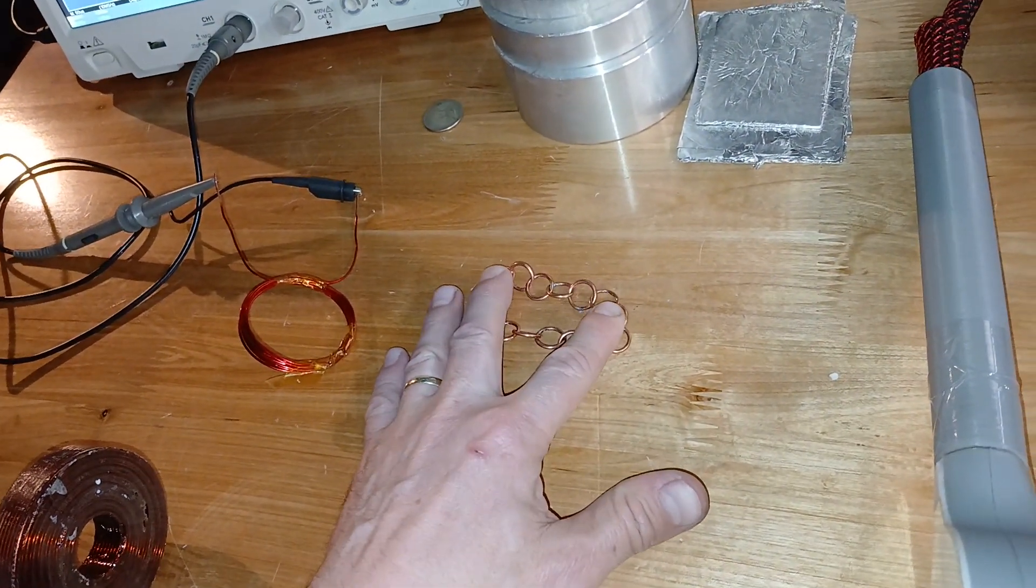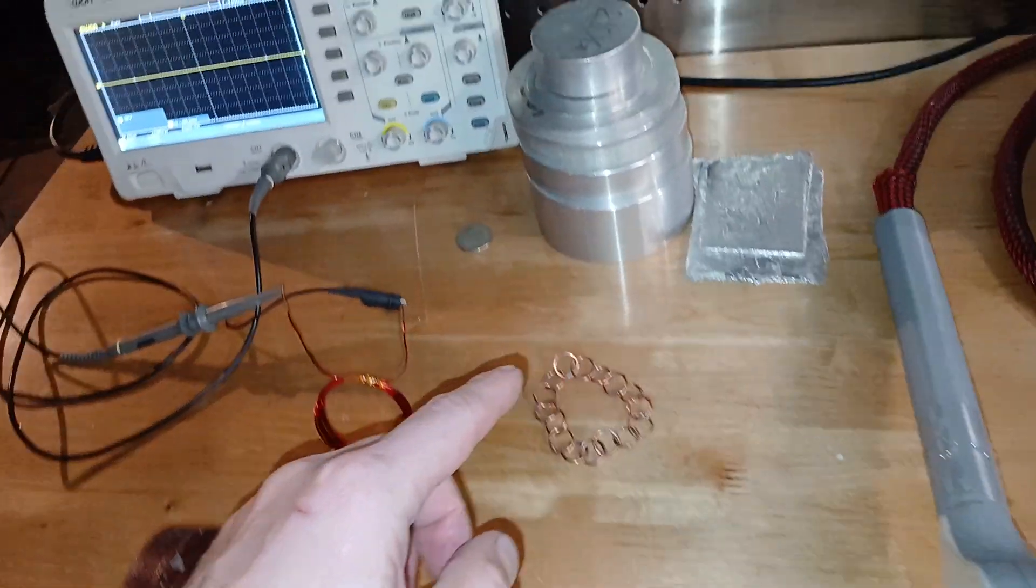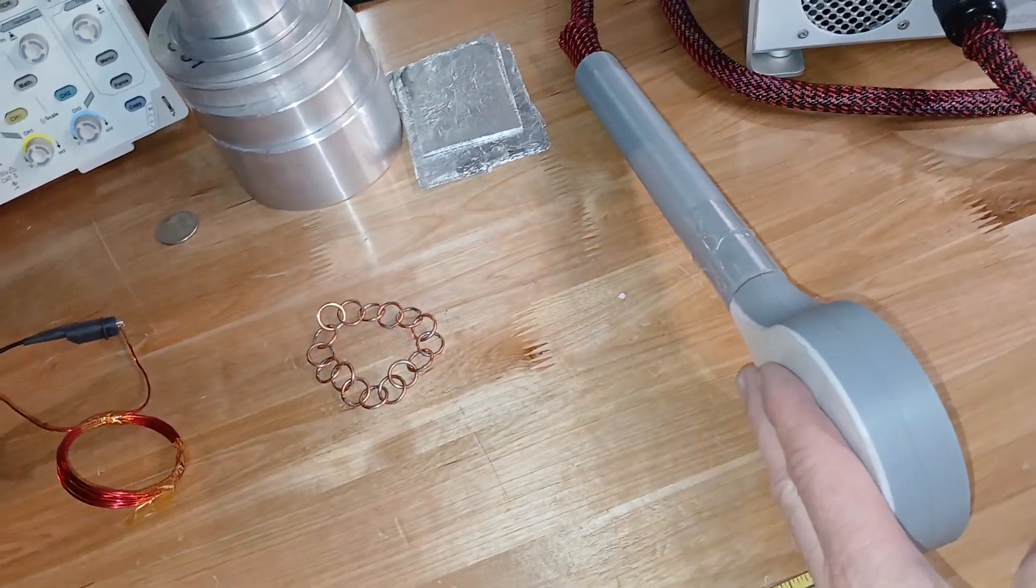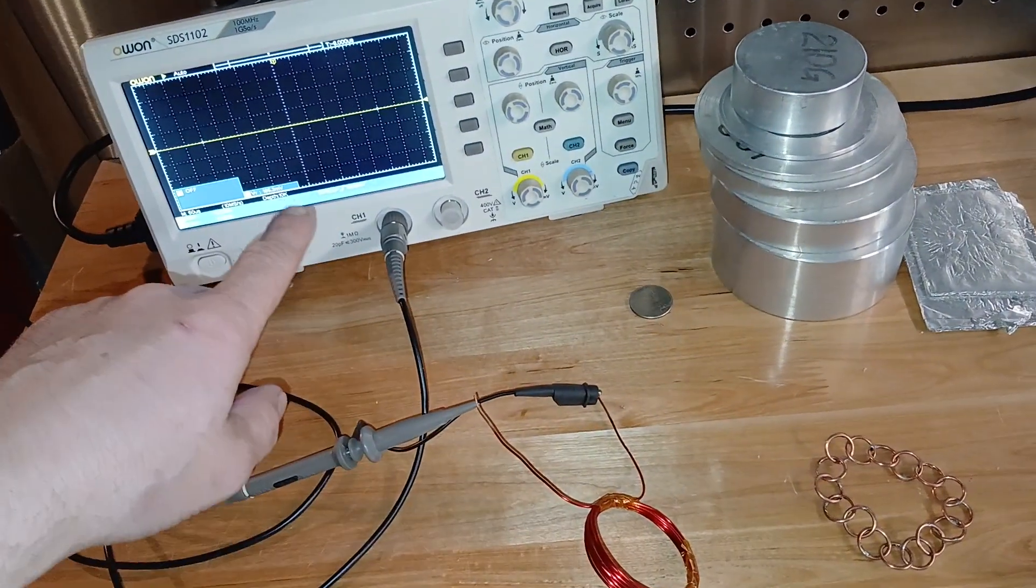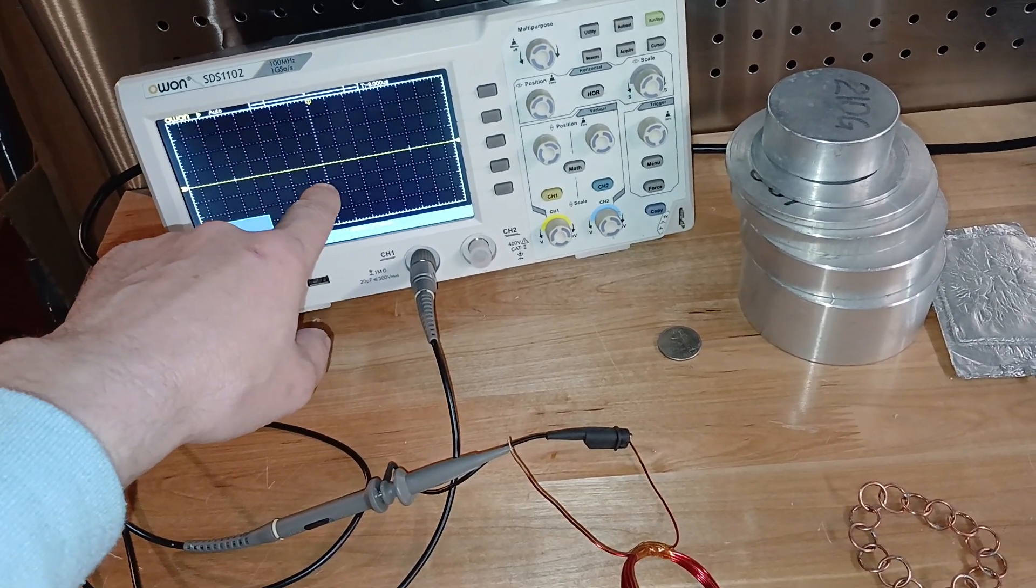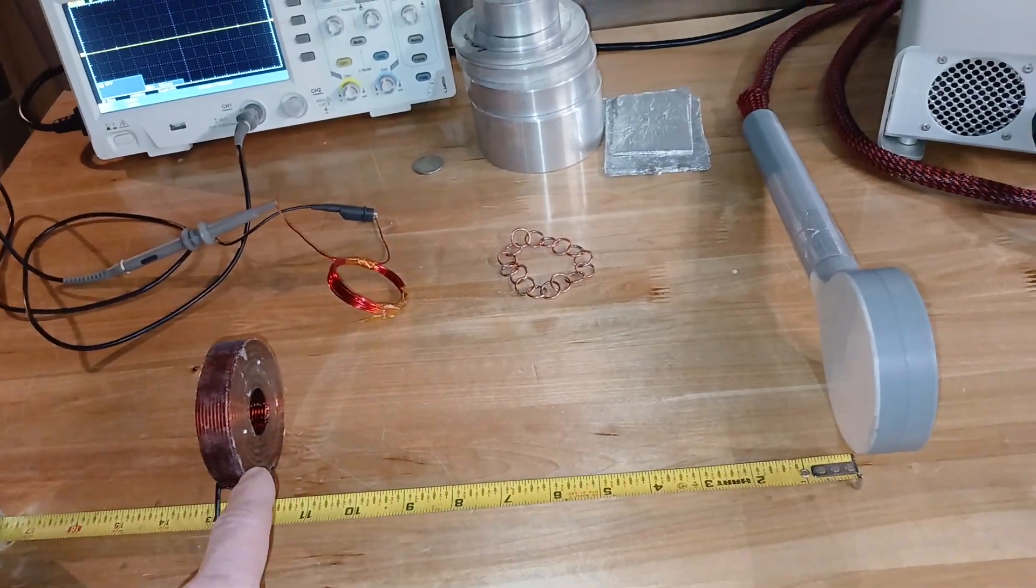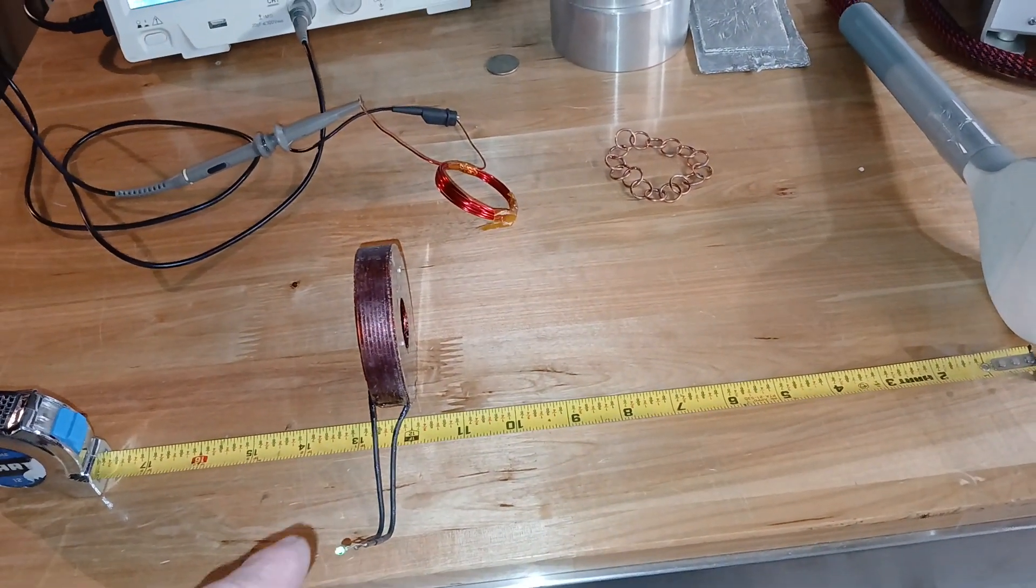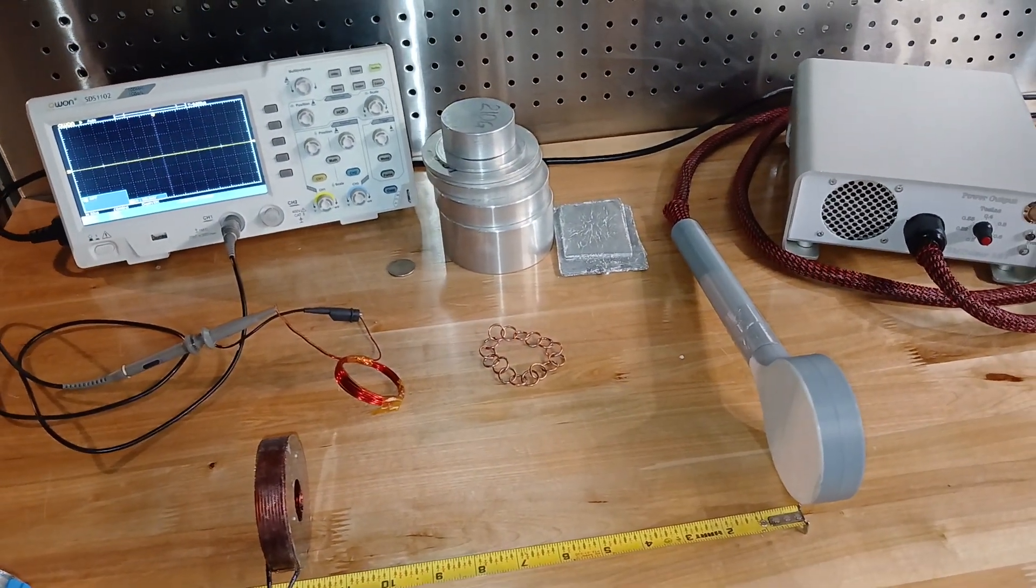Then we're going to test to see if we can get some spark from this chain if I place it on top of the coil. And we're going to measure the signal, catch the signal coming out from the coil onto this coil here and watch it on our oscilloscope. Also we're going to test how far the magnetic field travels and if we can get the LED to pulsate.